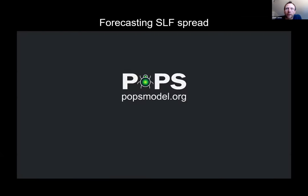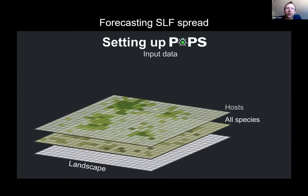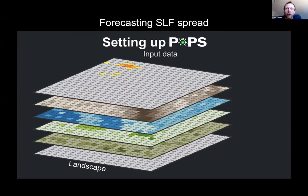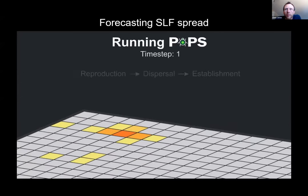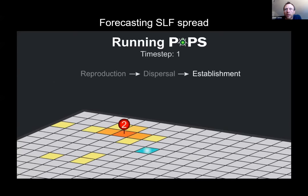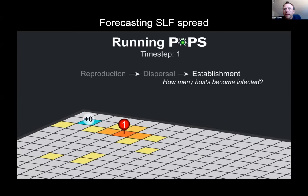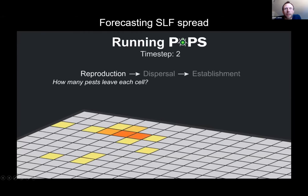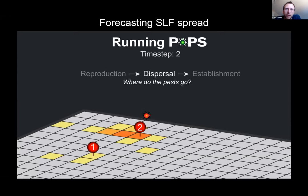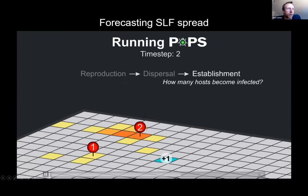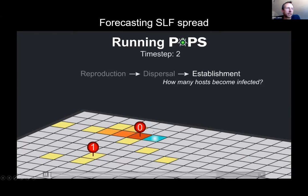Let's talk a little bit about the model. I'm going to show a video illustrating how the simulation works through space and time. We use environmental drivers and current detections coupled with statistically derived parameters to forecast spread into the future across space and time. The red circles show the number of spotted lanternfly dispersing from a cell. The model then determines where they disperse to, and they can either establish or not depending on environmental conditions where they arrive. We repeat this process for multiple time steps.